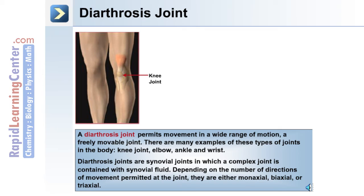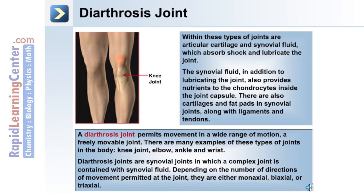Diarthrosis joints are synovial joints in which a complex joint is contained with synovial fluid. Depending on the number of directions of movement permitted at the joint, they are either monaxial, biaxial, or triaxial. Within these types of joints are articular cartilage and synovial fluid, which absorbs shock and lubricates the joint.